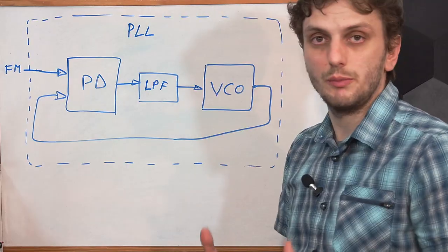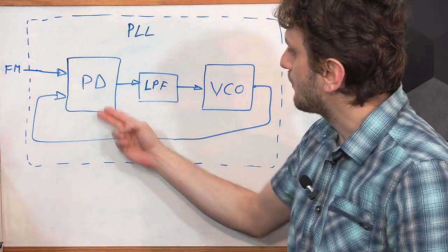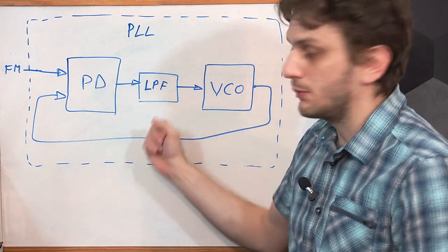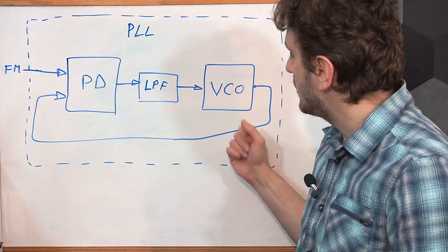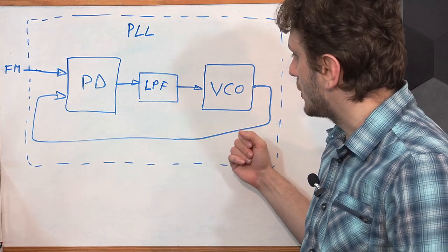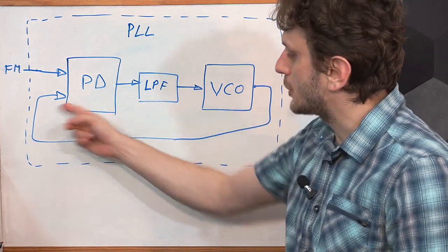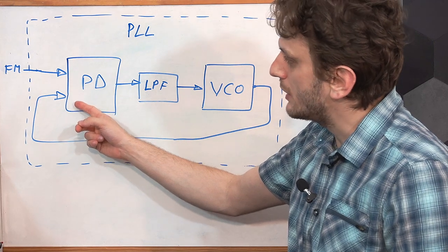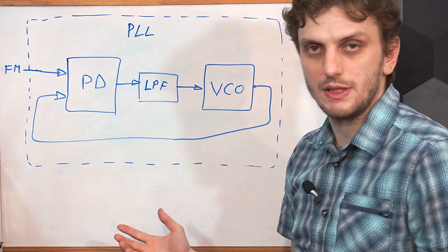Now to build the PLL, we need a phase detector, a low-pass filter to filter the output of the phase detector, and a voltage controlled oscillator whose output will be driving the phase detector, where it will be compared with our initial input signal.